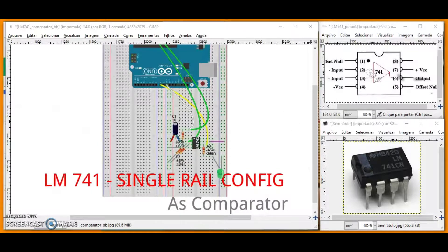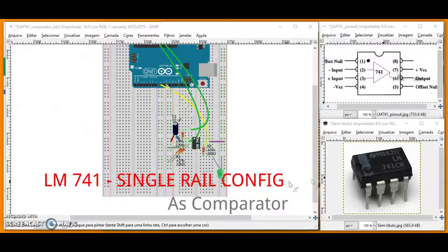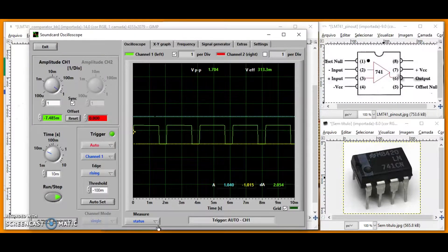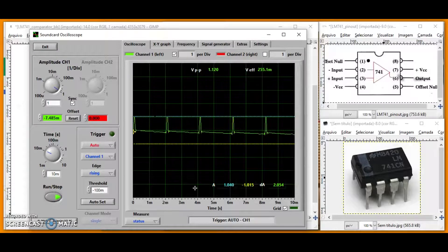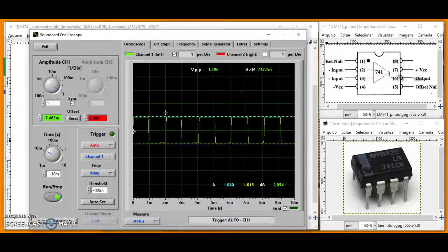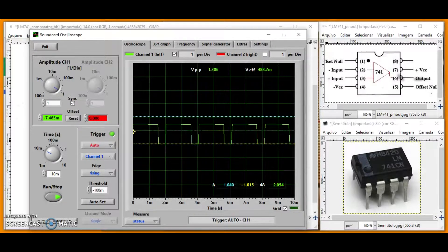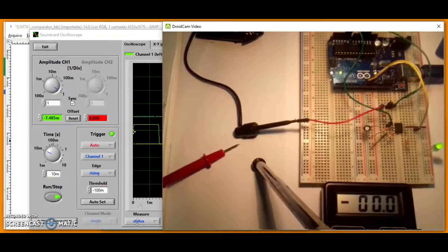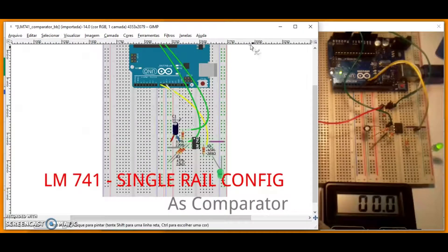The LM741 can operate with a single or dual power supply voltage. We will see this in this video. Here is the first circuit on its single power supply voltage as comparator, open-loop amplifier.